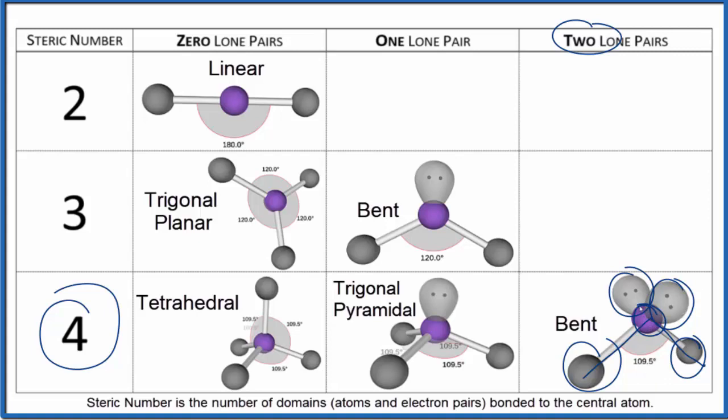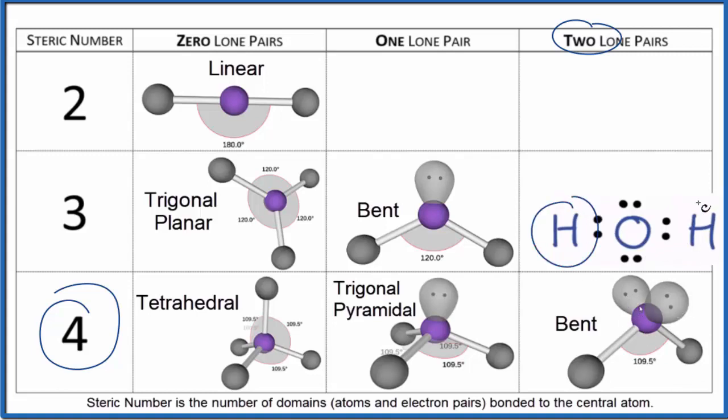A really good example of this is water. Our Lewis structure doesn't really show us the bent shape very well, but we can see right here we have a hydrogen atom, hydrogen atom, those are our two atoms, and then we have two lone pairs.